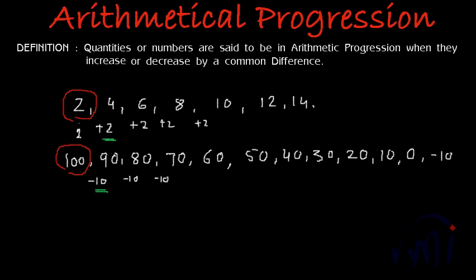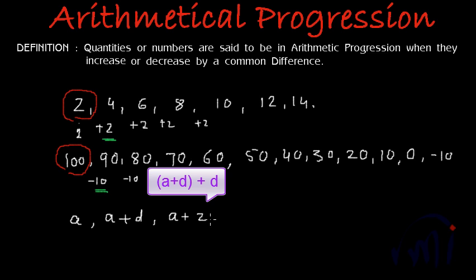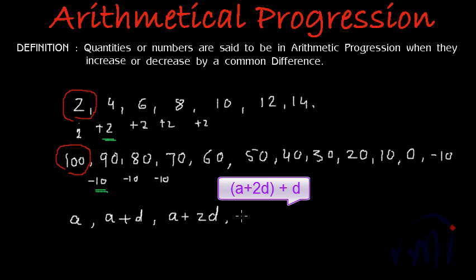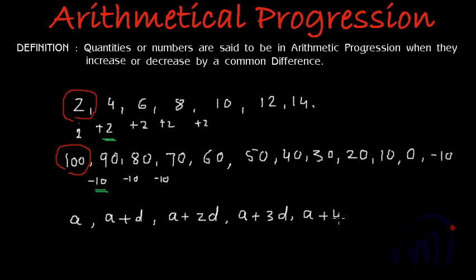So if I write the first term as a and the common difference as d, I can write a generalized format of an arithmetic progression where the first term will be a and second term will be a plus d and the third term will be second term plus d that will be a plus 2d and fourth term will be a plus 2d plus d that is 3d. Then we have a plus 4d and after that we will have a plus 5d and this can continue.